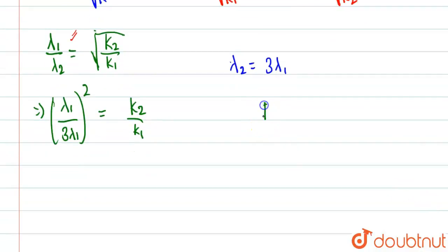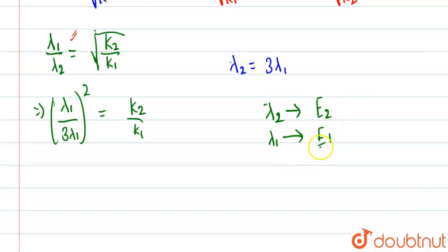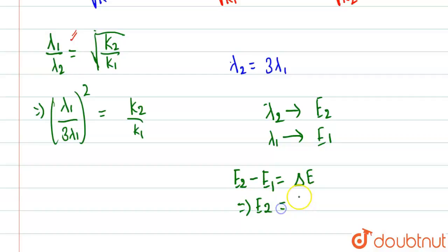λ₂ has energy E₂ and λ₁ has energy E₁. The change in energy means if we subtract E₂ from E₁ we get ΔE. We can write E₂ as E₁ plus ΔE, based on this equation.